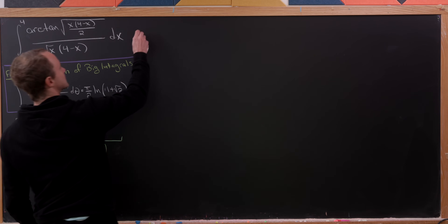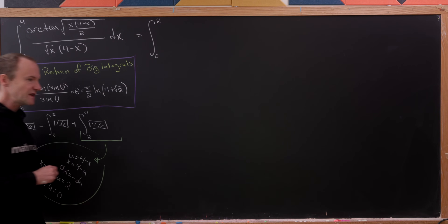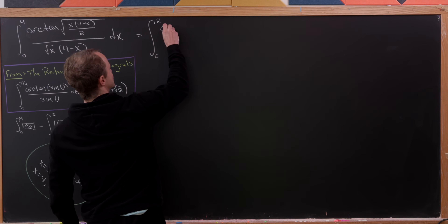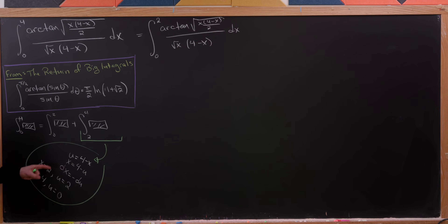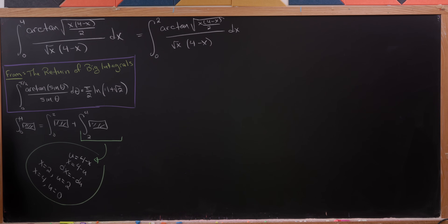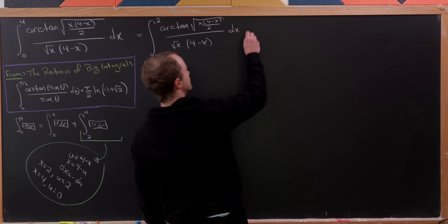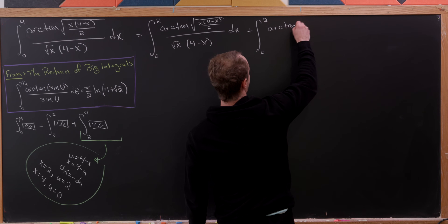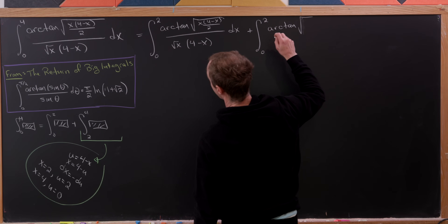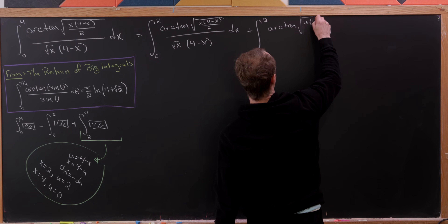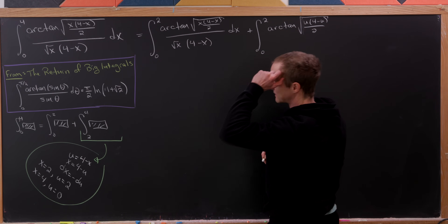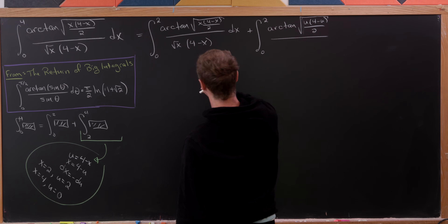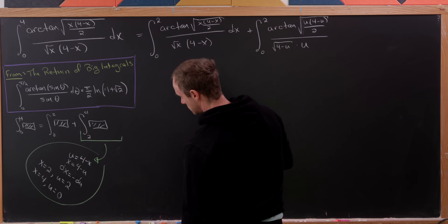We rewrite the integral from zero to two as before, then apply the u-substitution to the second piece. We pick up a minus sign from dx, which we use to switch the bounds from two-to-zero back to zero-to-two. Those two minus signs cancel, giving us the integral from zero to two of arctan of √(u(4−u))/2 over √(4−u)·u du — the same form as the first piece, just with variable u.